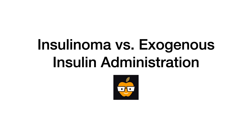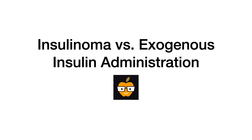Before we go further, it is a prerequisite that you understand insulin biosynthesis on a basic level. When it comes to insulin production, you start with something called pre-pro insulin. There's a beta chain shown in red, an alpha chain shown in green, and a connecting piece called C-peptide. That is what pre-pro insulin looks like.